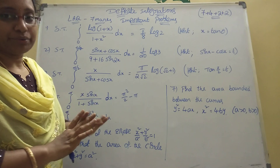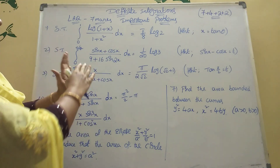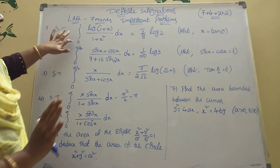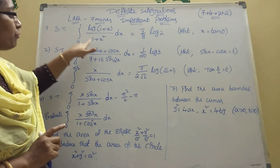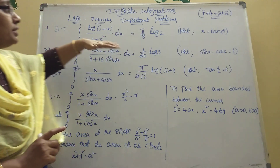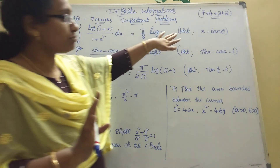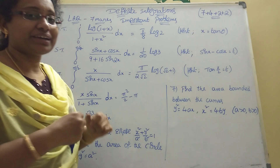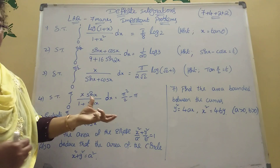I am explaining the hints for the seven-mark problems. First one: show that the integration from zero to one of log(1+x) divided by (1+x²) dx equals (π/8) log 2. I already posted this video. The hint is: take x = tan θ — you will easily get the value.